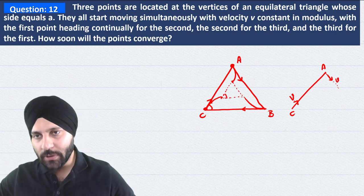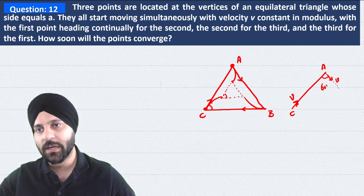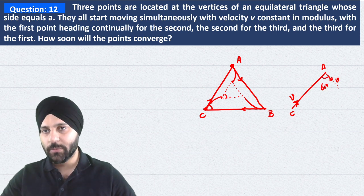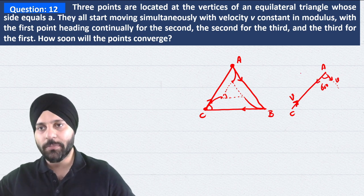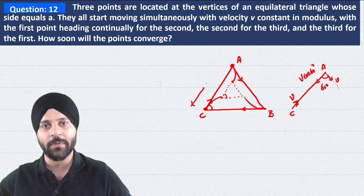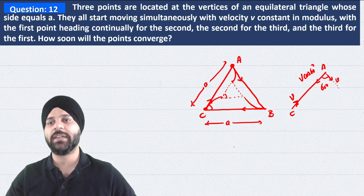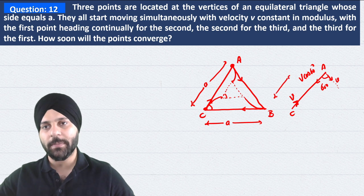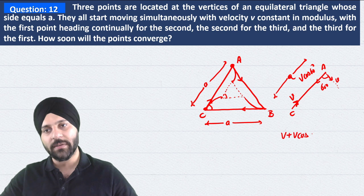So we should look at the initial velocity of both toward each other. C is already going toward A, but what component of A's velocity is toward C? We need to find that. Since this angle is 60 degrees, this component will be v cos 60 degree. And the separation between them provided in the question is the side length a, since it's an equilateral triangle all sides are a.